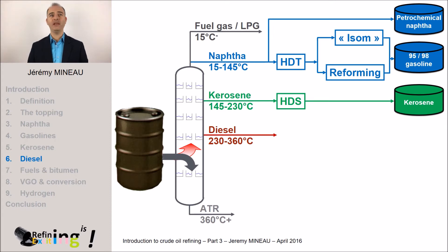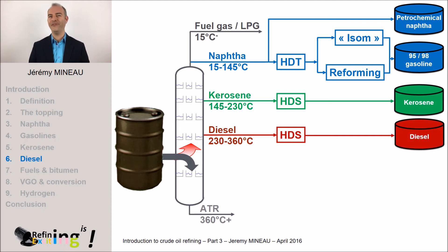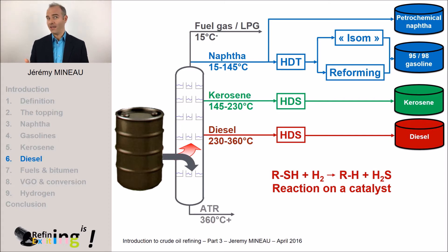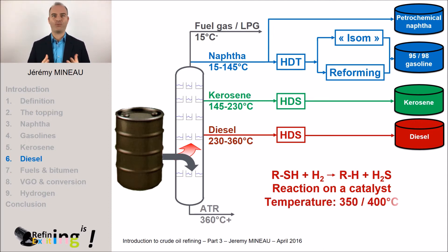Generally speaking, in the refinery, we can find a diesel hydrotreater to remove the sulfur from the diesel fuel with the help of hydrogen. The catalyst is always the same, but the operating conditions are more severe than for a naphtha hydrotreater. Why? Because the molecules are more complex and more difficult to treat. The temperatures can go up to 400 degrees and the pressures can reach 40 to 90 bars.